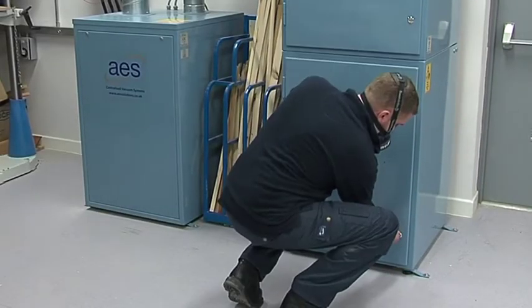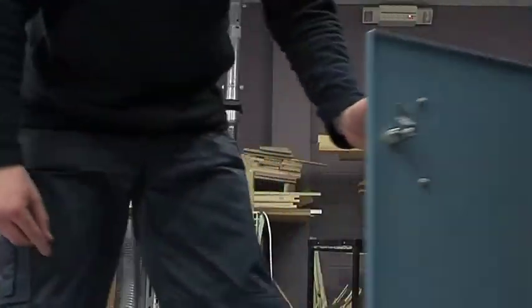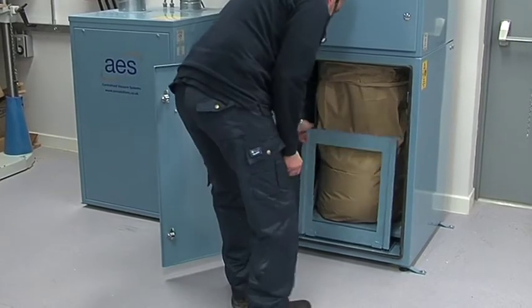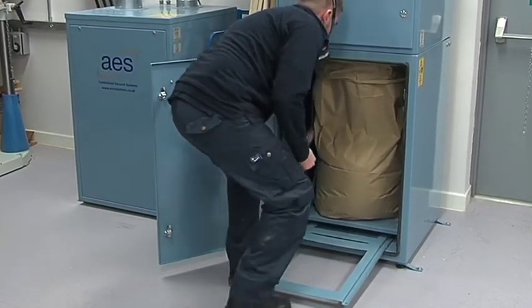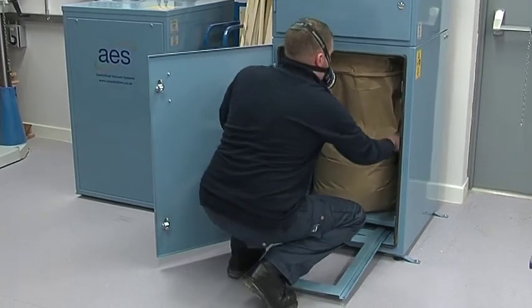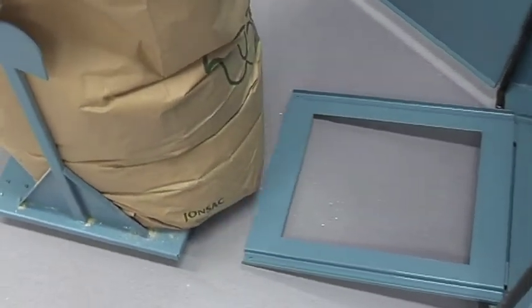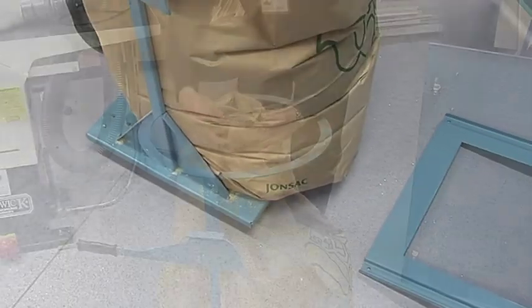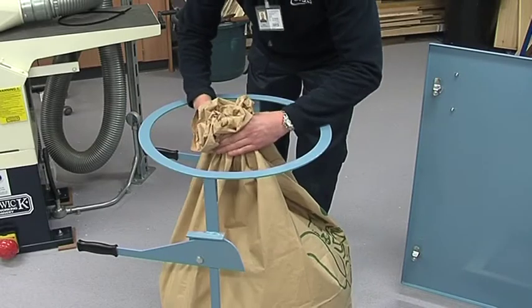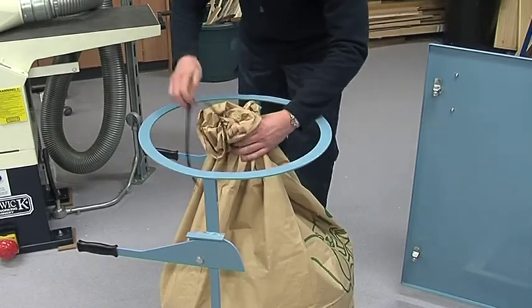The CVAC system's dust collection unit comes with its own built-in trolley, allowing the user to dispose of waste easily and safely, reducing risks of any back injuries caused by heavy lifting. Paper dust collection bags are used as standard to allow for the sealed bag containing the wood waste to be disposed of by the appropriate waste disposal routes.